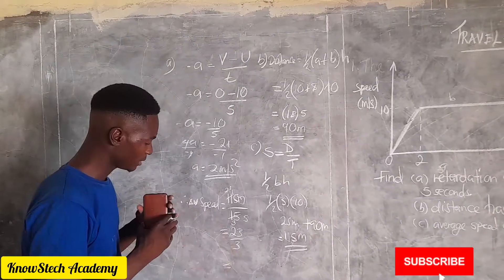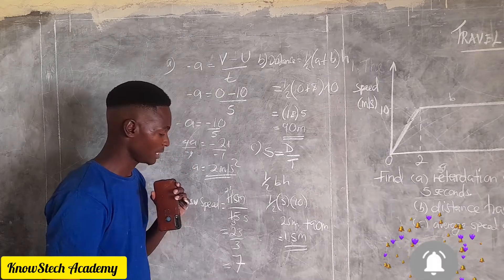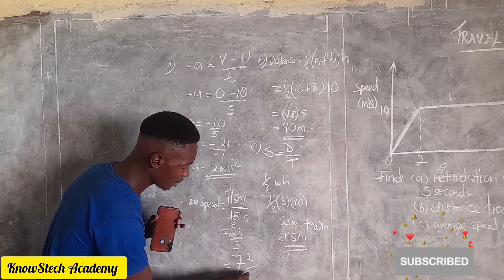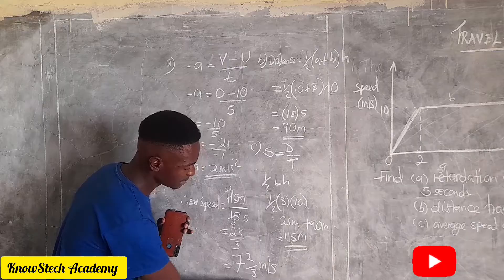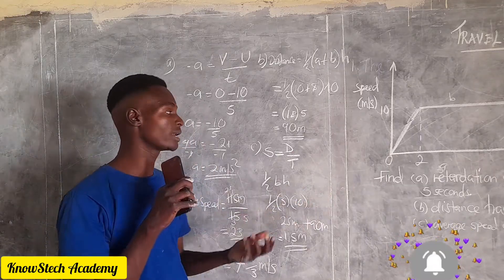Then how many times does 3 go into 23? It goes there seven times. Seven times into 21, so a remainder 2 over 3 meters per second. This is the average speed for the whole journey.